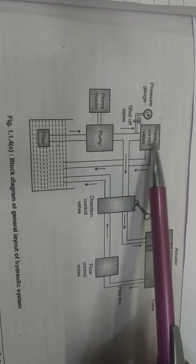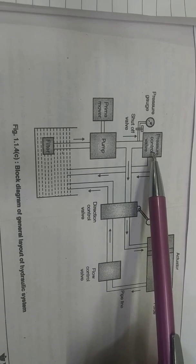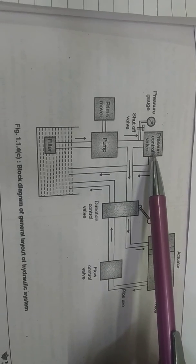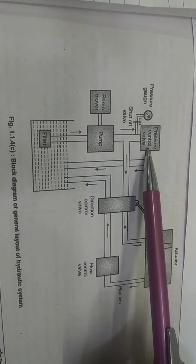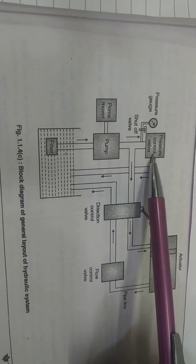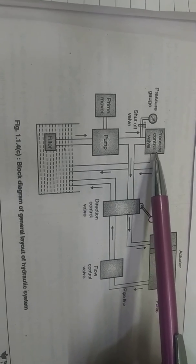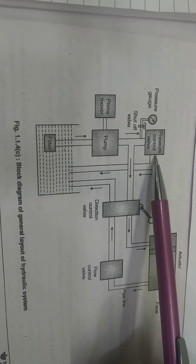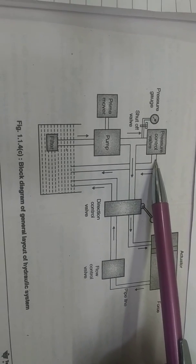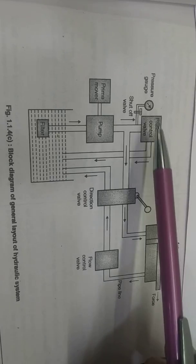The next component is the pressure control valve. There are different types of pressure control valve. The main function of the pressure control valve is to control or regulate the pressure of the oil as per the application or as per the requirement.